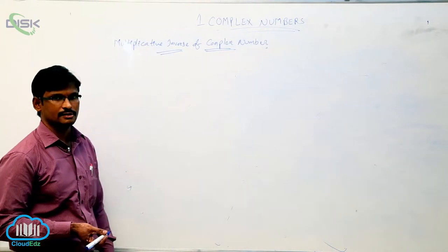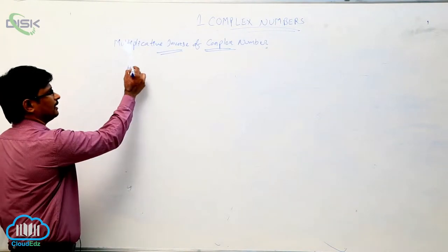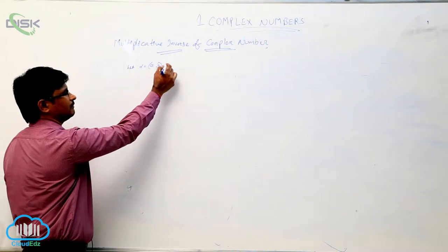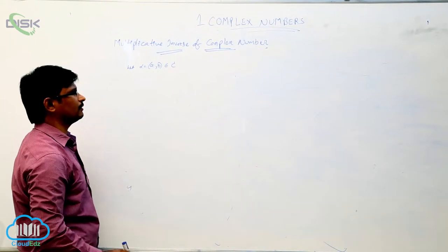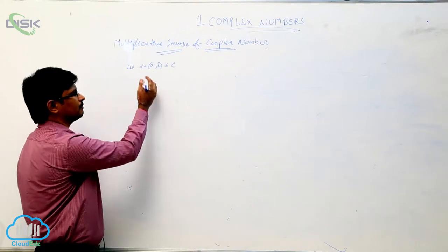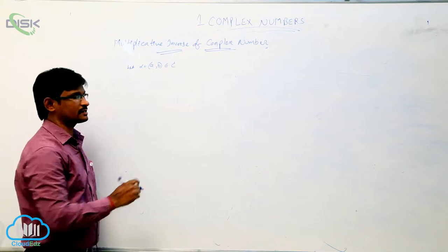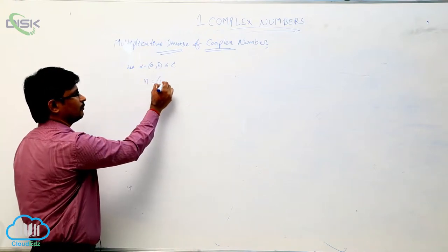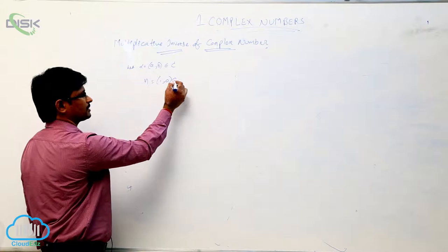What is the multiplicative inverse of a complex number? Let alpha equal to (a, b), which is the complex number. And we know that in multiplicative — what is the multiplicative identity in complex number? That is (1, 0), right? Which belongs to the complex numbers.